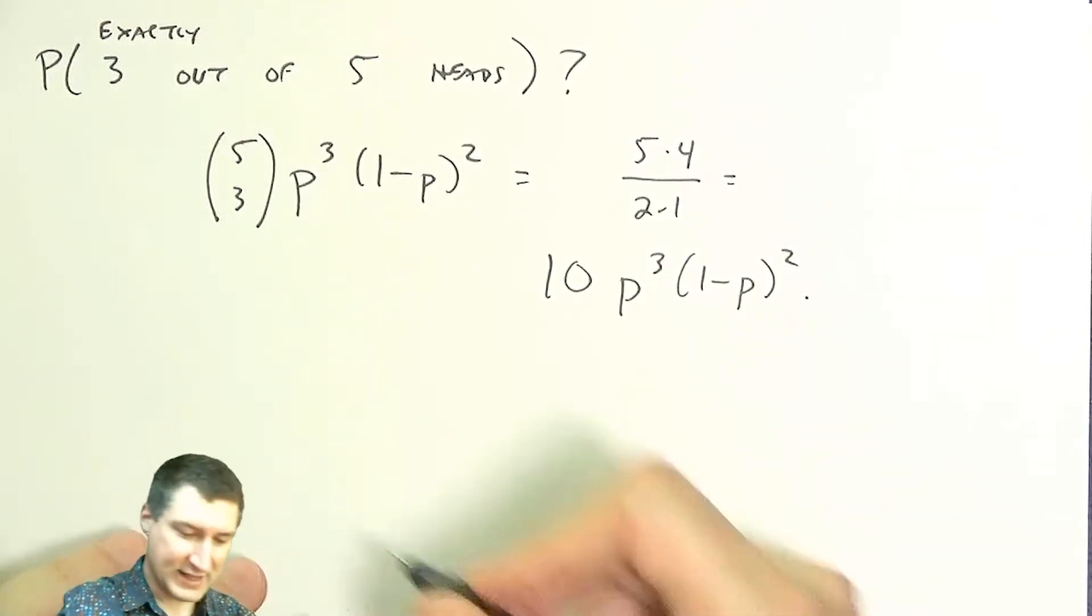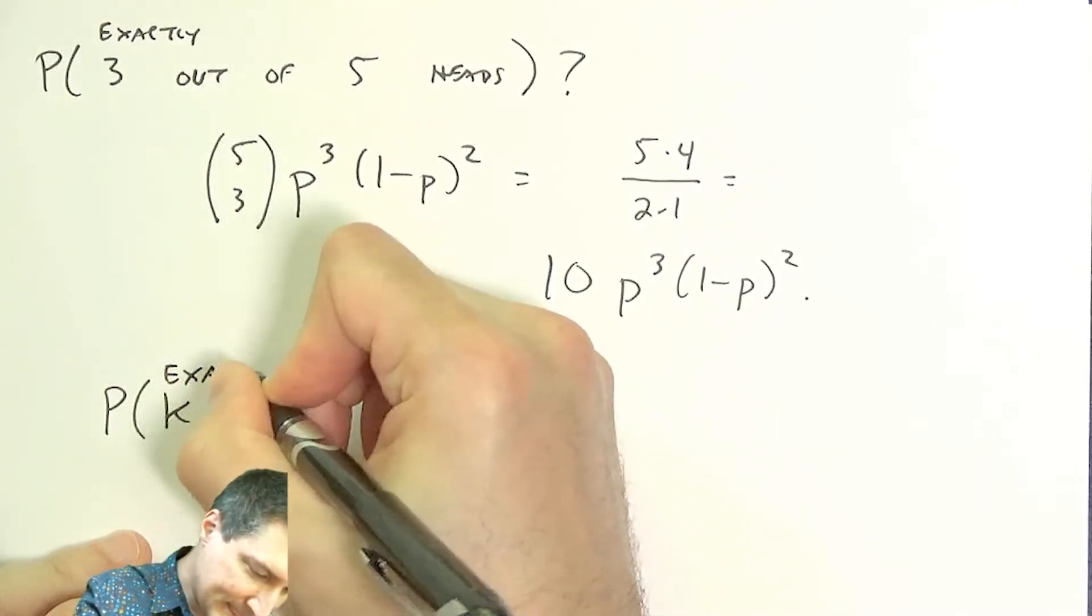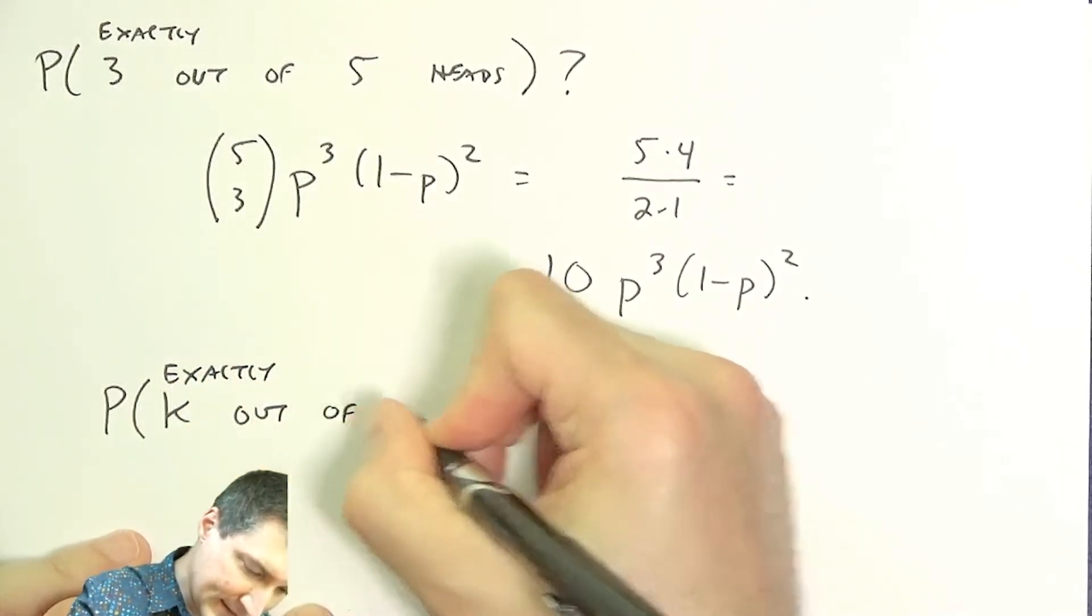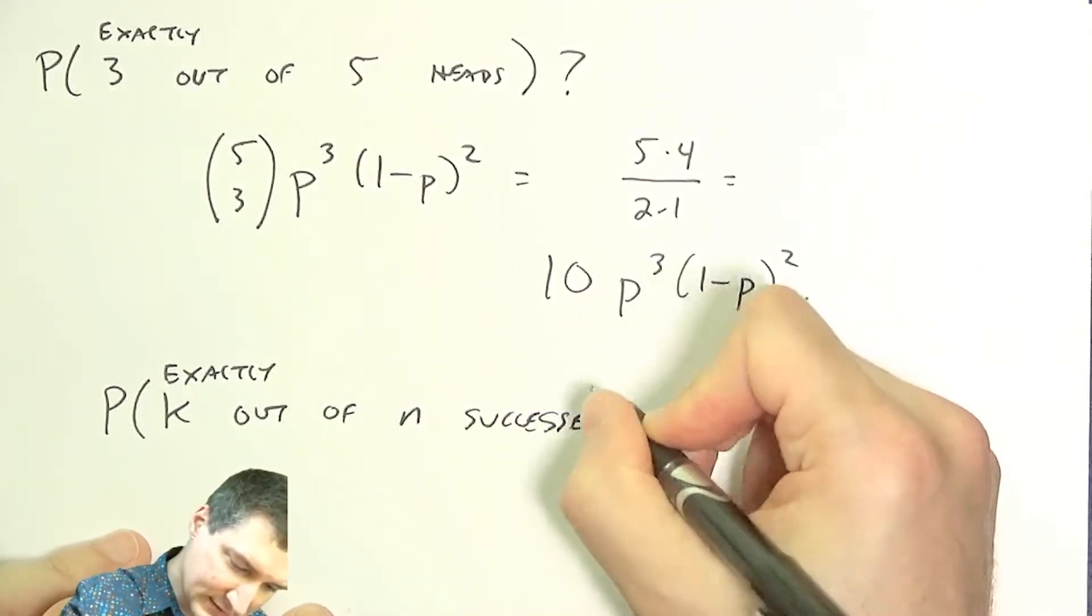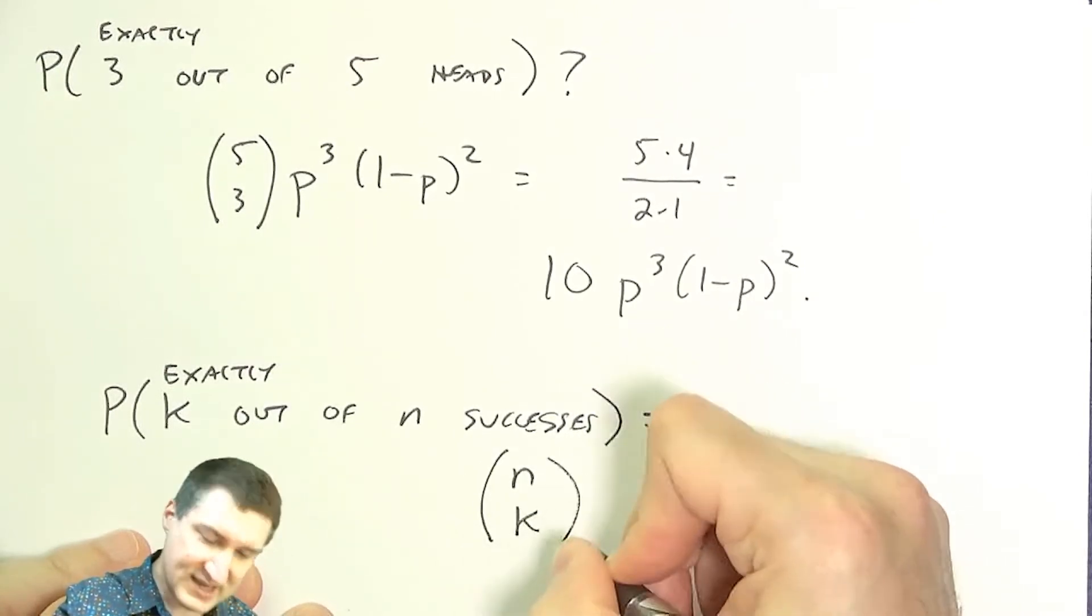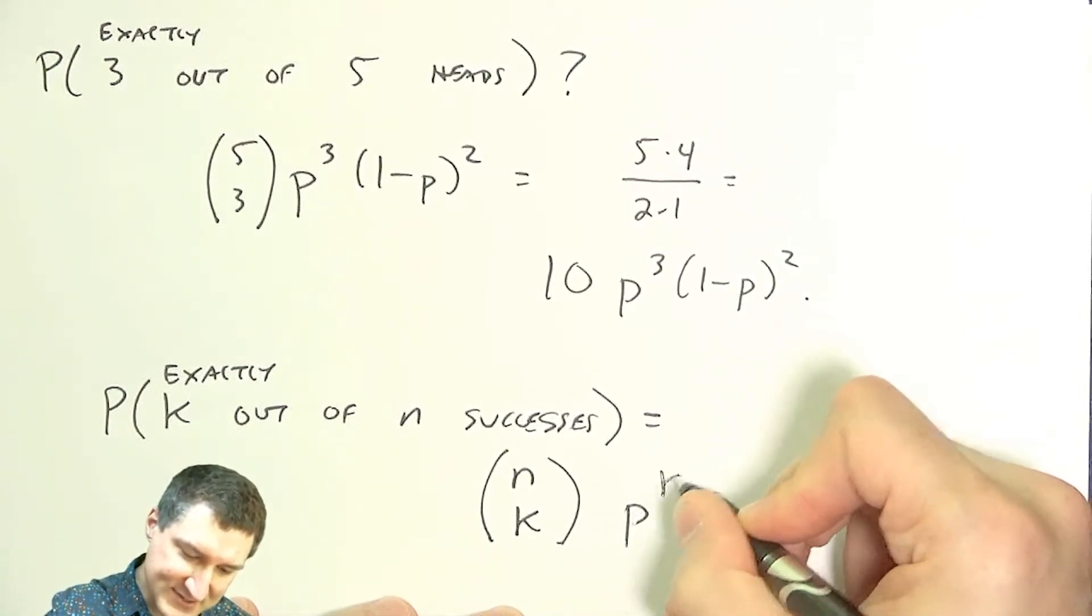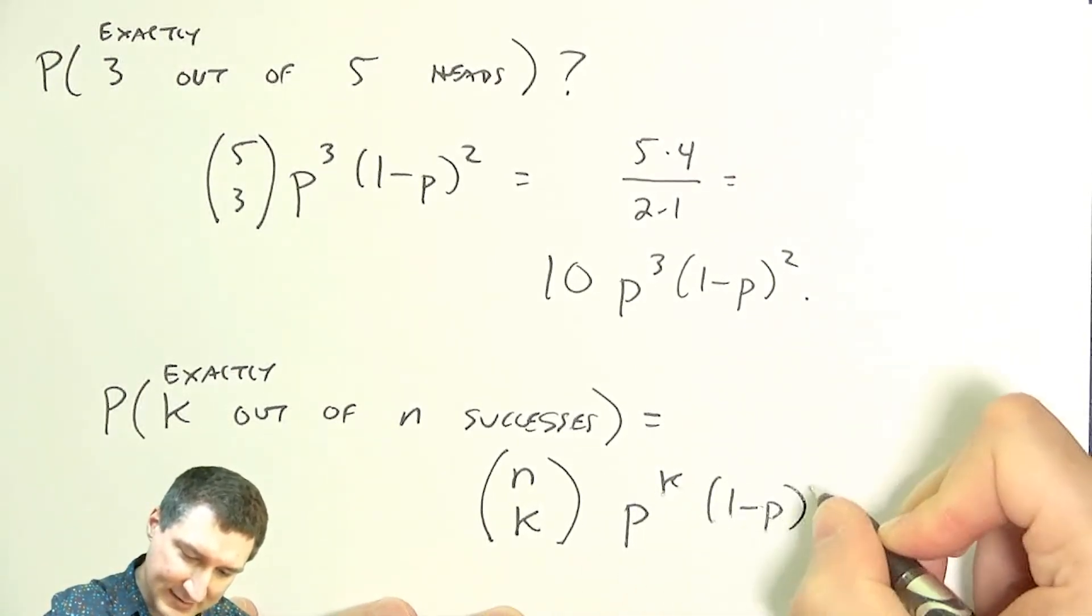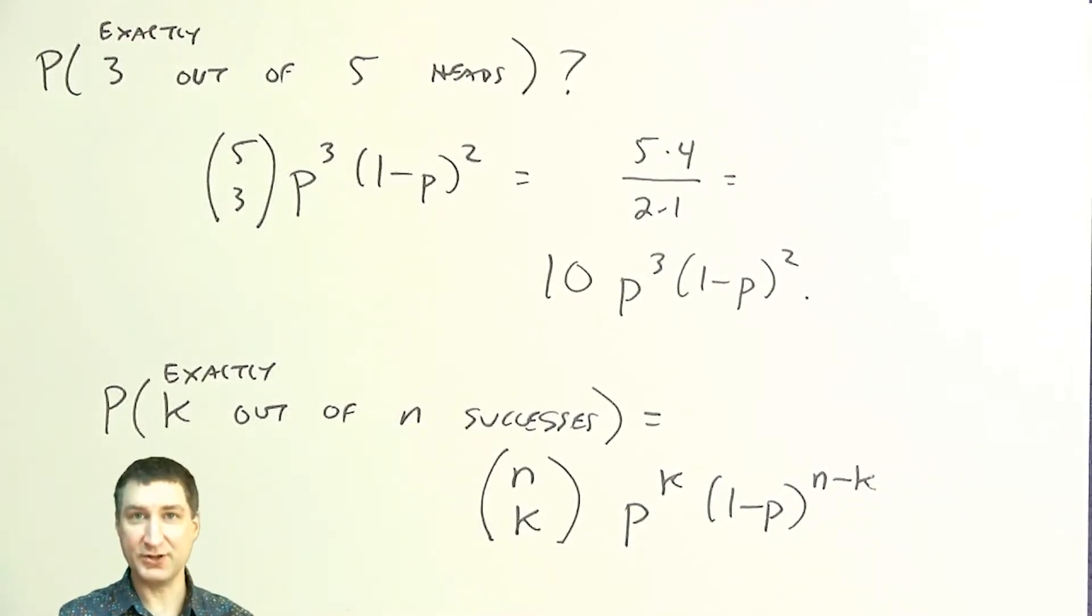In general, I could say what's the probability of getting exactly k out of n successes in a Bernoulli trial? That's n choose k ways of getting where those k slots are, and then I have k successes and n minus k failures. So this is kind of the general formula for this exact kind of problem.